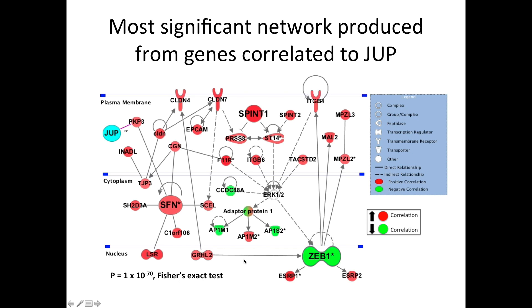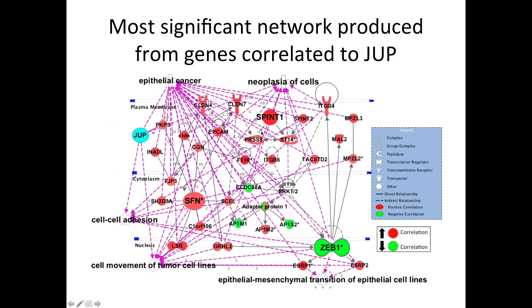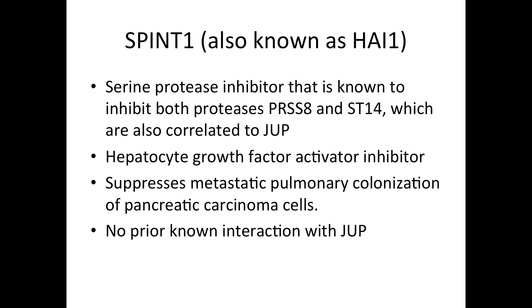I showed this network to my collaborator — look at all this cool stuff — and he said we can only investigate one thing. So let's go after SPINT1. You can overlay different pathways on this; looking at what these genes do, it all makes sense with lung cancer — EMT transition, neoplasia, epithelial cancer. SPINT1 is a protease inhibitor. It inhibits two genes that are also correlated to our genes. It was the top correlated gene to JUP in both datasets. It's a hepatocyte growth factor activator inhibitor — a growth factor inhibitor — so it might be a potential anti-cancer gene.